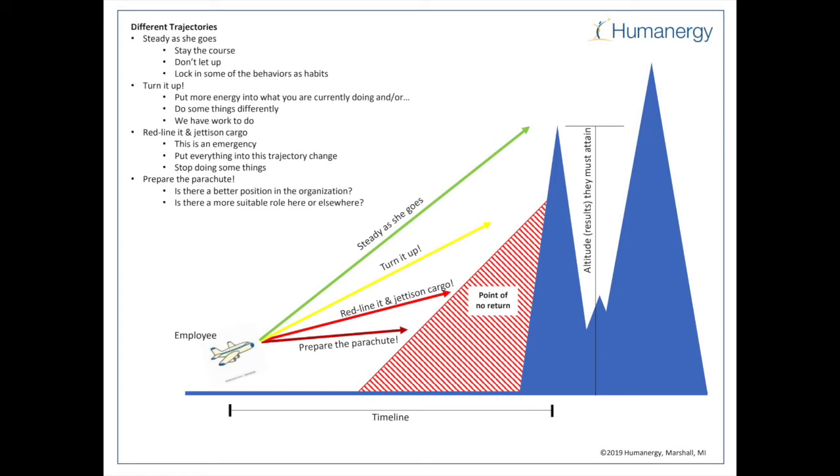And then there's a fourth line, which is pretty much horizontal. This is called the prepare the parachute line. It means: is there a better position in the organization better suited to this individual's talents, or is there a more suitable role elsewhere?